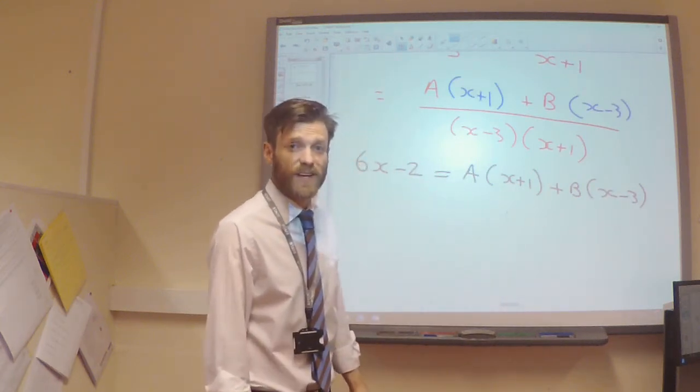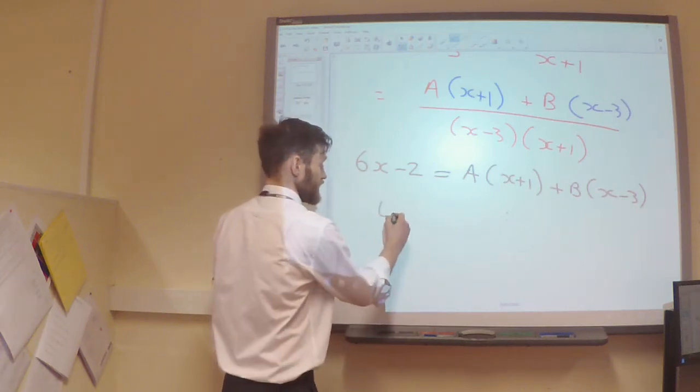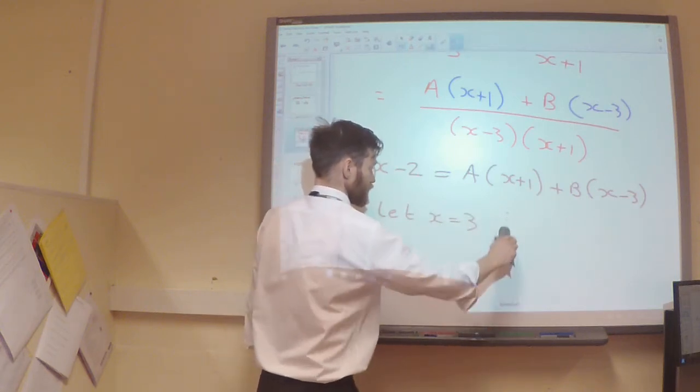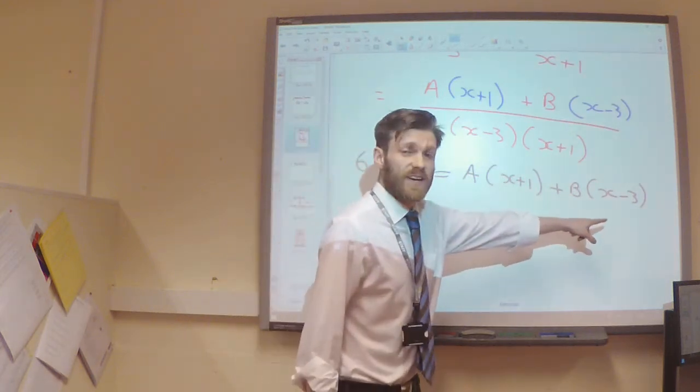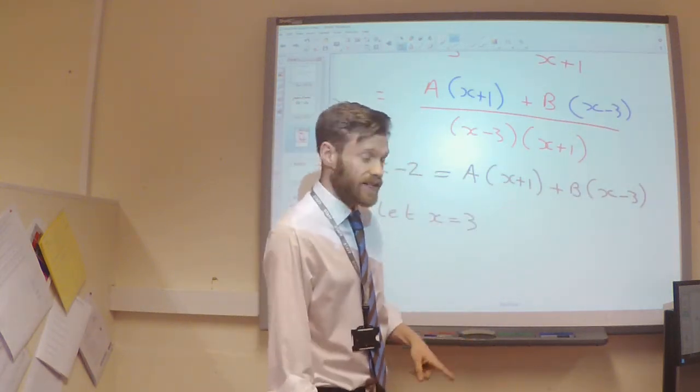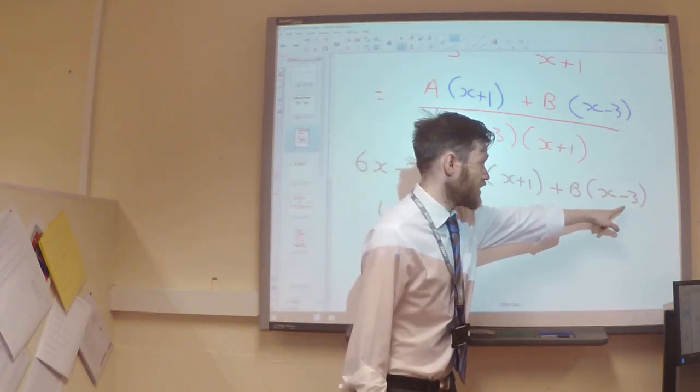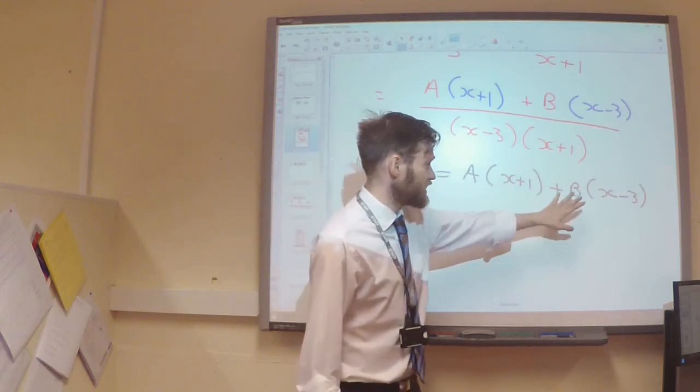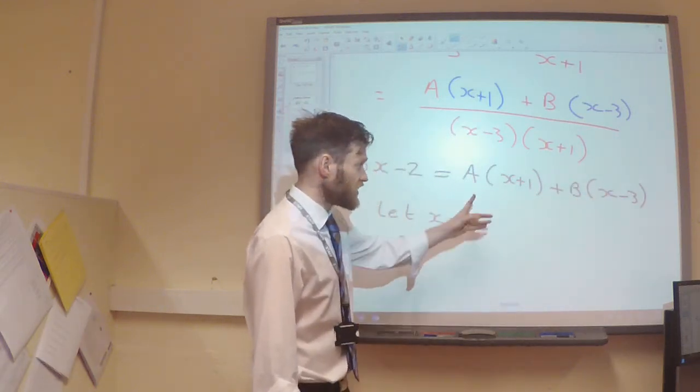There's a really quick, simple trick that I can use to do this. So, I'm going to say, let x equals 3. By doing that, over on the right hand side, when x equals 3, 3 minus 3 will be 0. So, what that allows me to do is to ignore the B part to begin with, and just focus on the A.